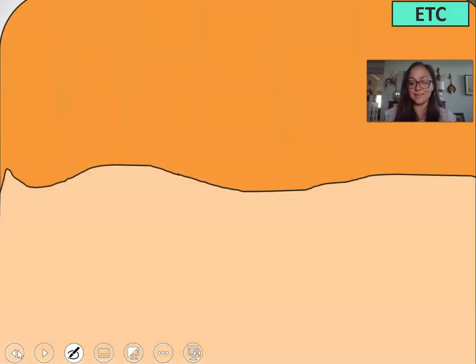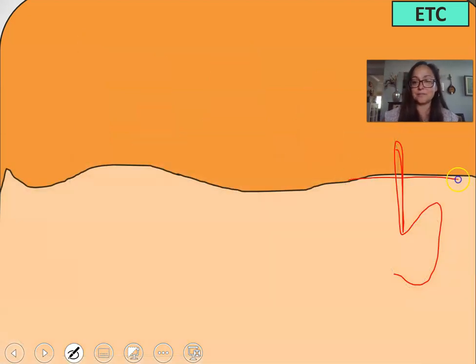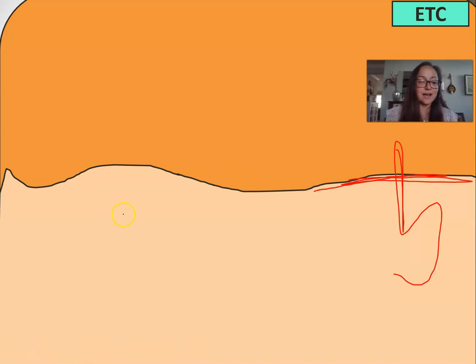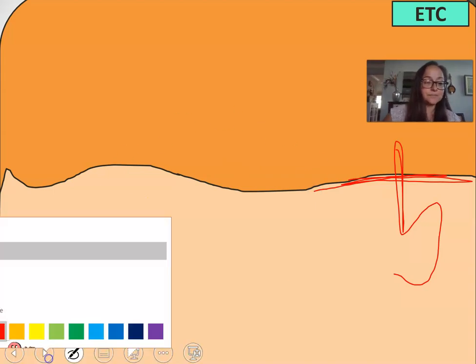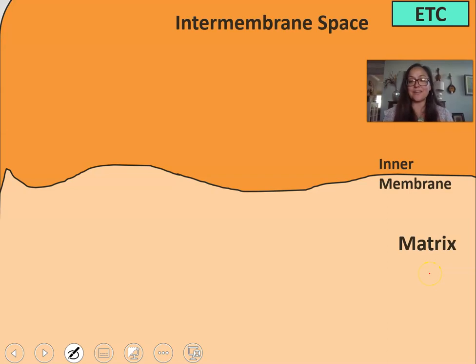What I'm zooming into is when we look at this inner membrane, that is the location that we will be seeing right here in our video. This part is the matrix on the inside, that light beige area, and then the orange is the intermembrane space, or the space between the two membranes.